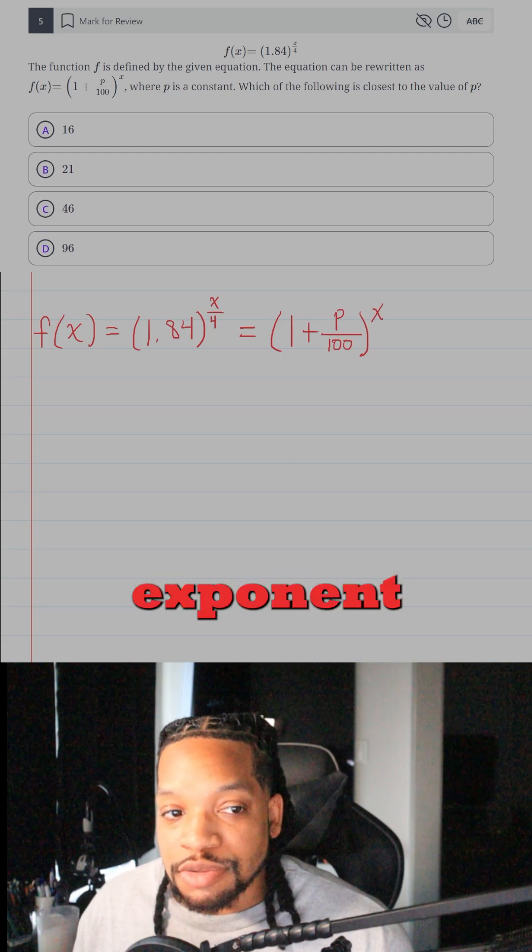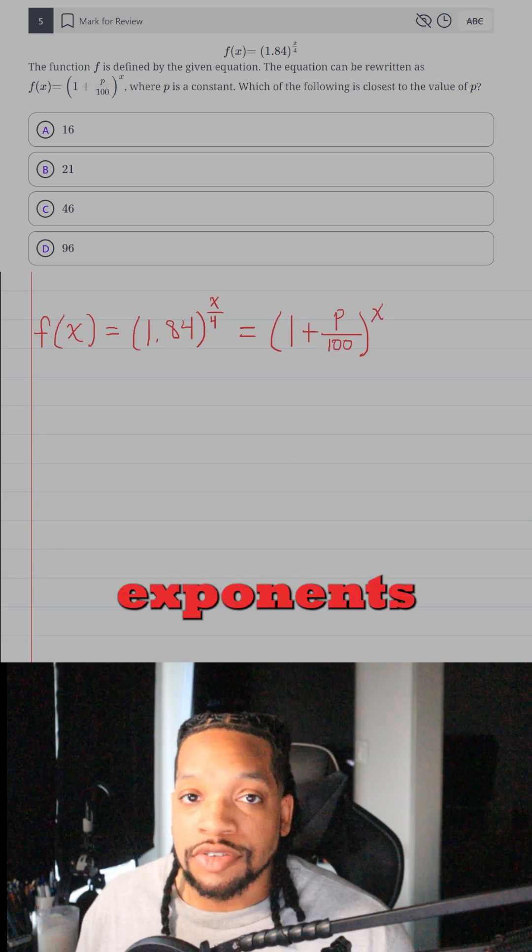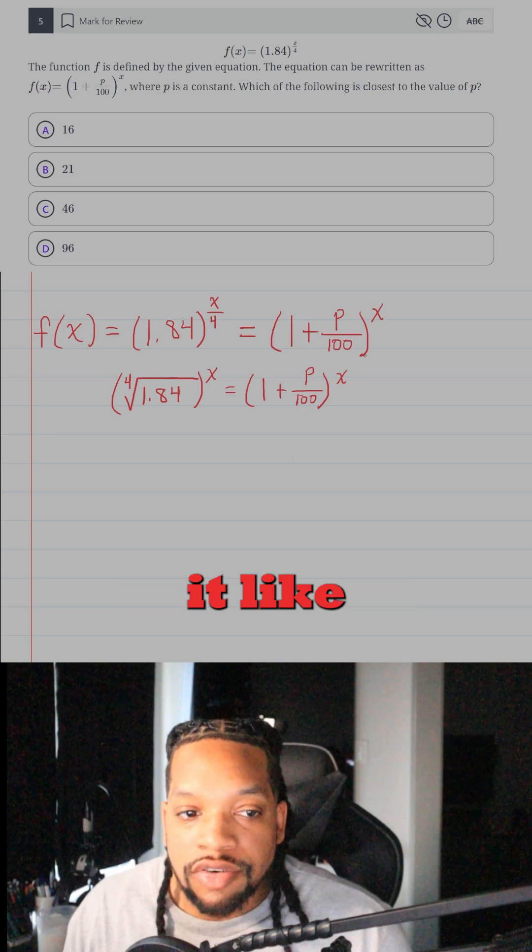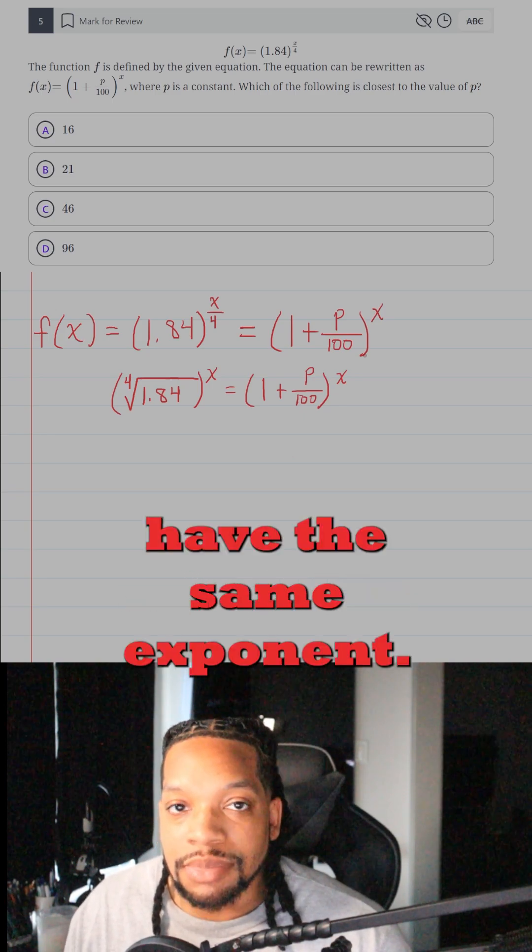Looking at the fact that that exponent is a fraction, I know that I can rewrite that using my properties of exponents and write it as a radical. And so when you rearrange it like this, it's easy to tell that the left side and the right side have the same exponent.